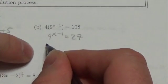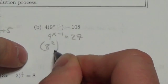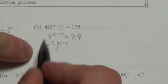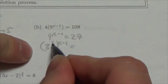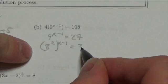So I can rewrite 9 as 3 squared, this is to the x minus 1. I've done nothing, I haven't changed anything, 3 squared is still 9, and 27 is 3 cubed.